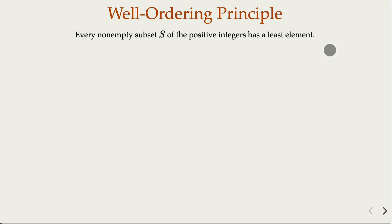There is also another related proof method: the method of infinite descent. Here, we want to use it to prove that the square root of 3 is irrational.